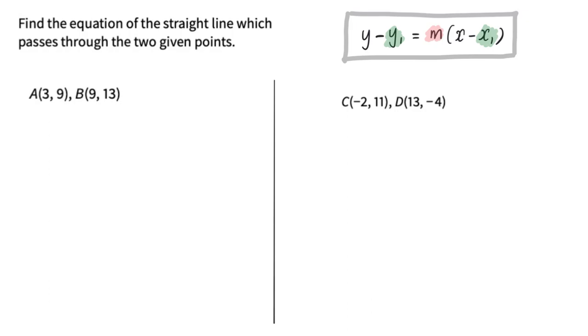When we are given two points, the very first step is to find the gradient of the line, and thereafter we are going to utilize the general formula at the top right hand corner to find the equation of the line. Without further ado, let's get started.